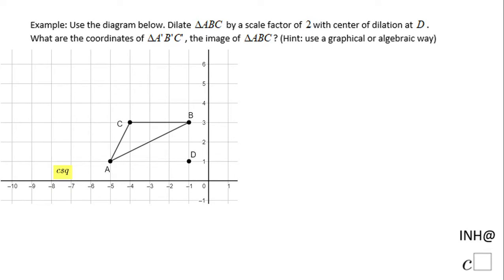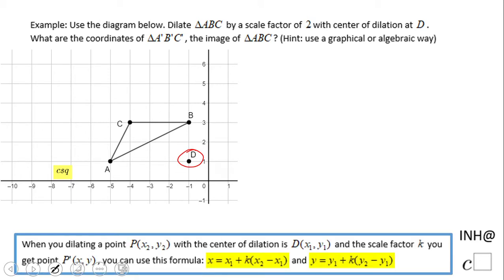Welcome back to I Need Help at C Squared. In this problem we're going to dilate the triangle by a scale factor of 2, with the center of dilation at D, which is at (-1, 1). We have two ways to do this: algebraic and graphical.